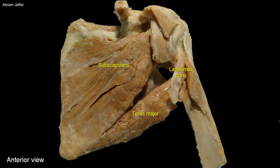The flesh of latissimus dorsi has been removed from this prosection and what remains is the ribbon-like tendon of the muscle. In the posterior wall of the axilla, there are three intermuscular spaces: a quadrangular space and two triangular spaces. One is medial to the quadrangular space, and the other is inferior to the quadrangular space.